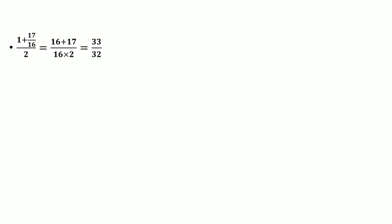To find yet another rational number, we compute (1 + 17/16)/2. The LCM is 16, so we get (16 + 17)/(16 × 2) = 33/32. So 33/32 is another rational number. We have now found nearly 5 rational numbers between 1 and 2, and we can find as many as possible by continuing in the same manner.